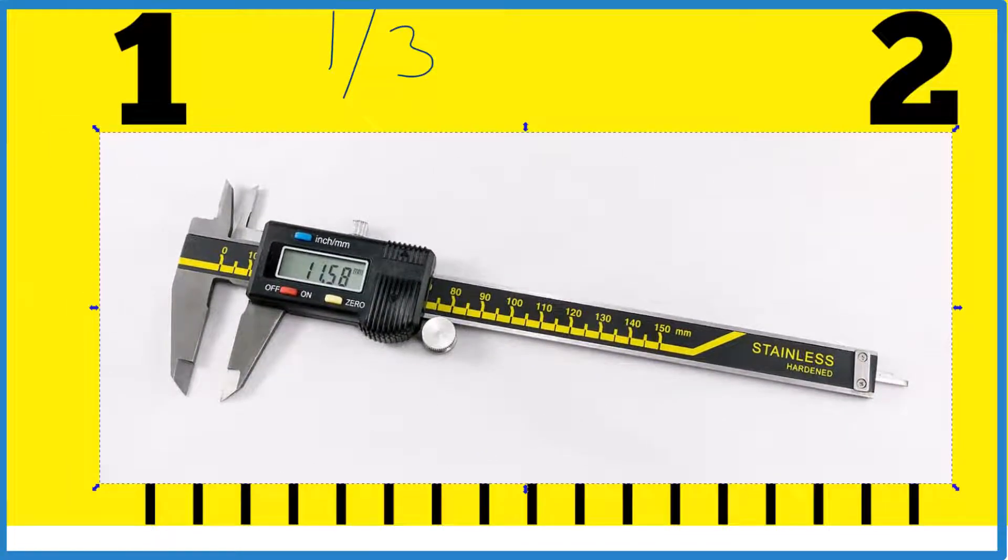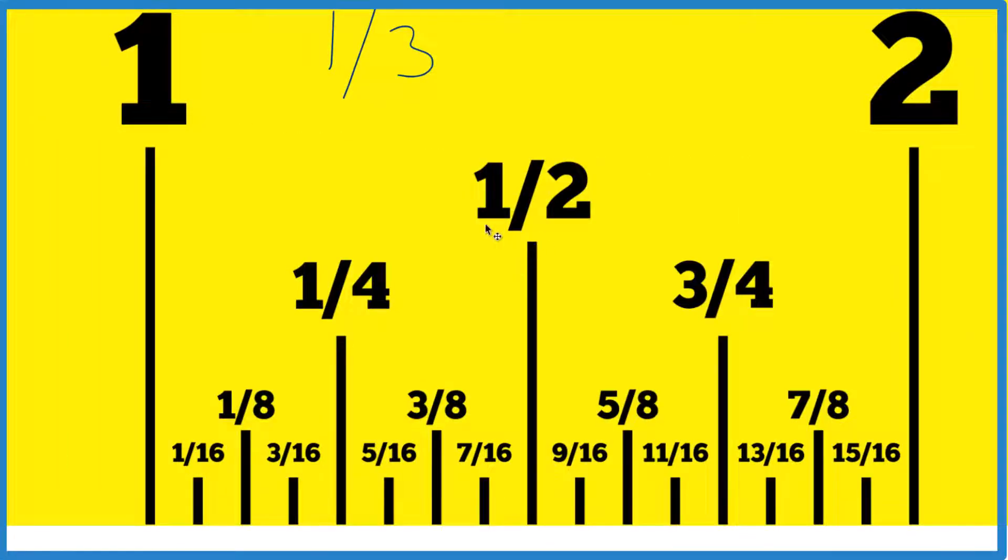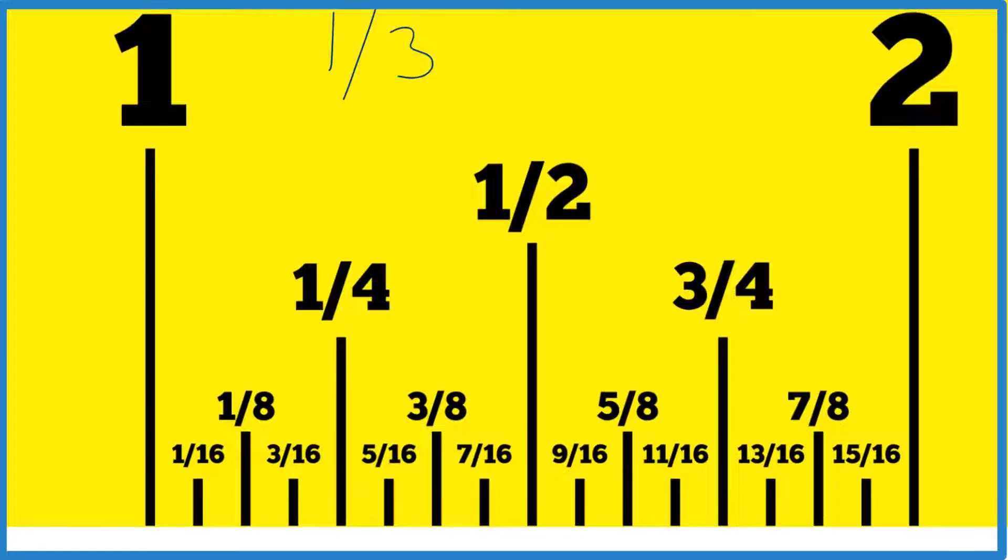a digital caliper like this, and that would let you be really precise. But if you didn't have this and you needed to find one-third on your ruler, the best way is going to be to approximate it.